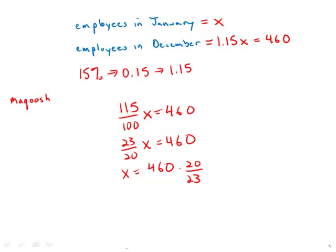So we're going to cancel. 23 goes into 46 two times, so 23 goes into 460 twenty times. We're left with 20 times 20, which is 400. This is the answer—the number of employees in January. Answer choice B.